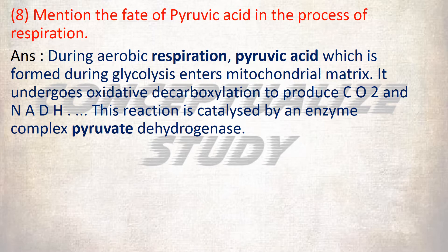Next, mention the fate of pyruvic acid in the process of respiration. During aerobic respiration, pyruvic acid, which is formed during glycolysis, enters the mitochondrial matrix. It undergoes oxidative decarboxylation to produce carbon dioxide and NADH. This reaction is catalyzed by an enzyme complex called pyruvate dehydrogenase.